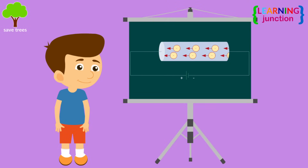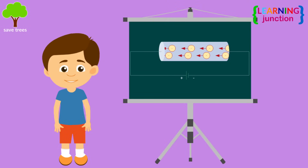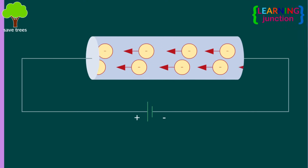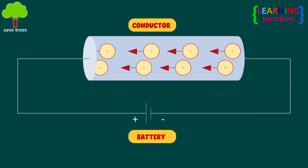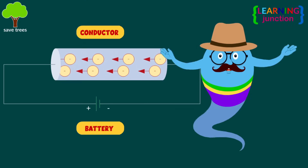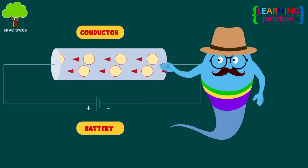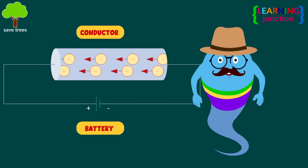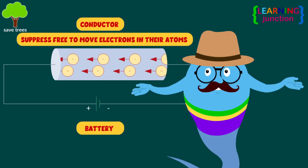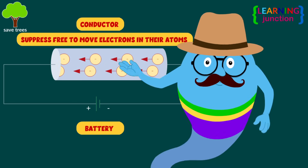Conductors are the materials which provide the easiest path to the electric current. Current smoothly travels through the conductors. Conductors provide a good path to an electric current because they possess free to move electrons in their atoms.